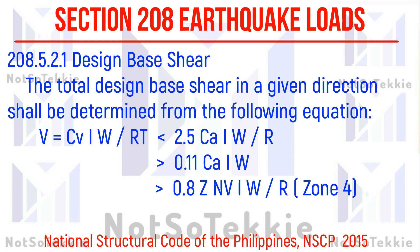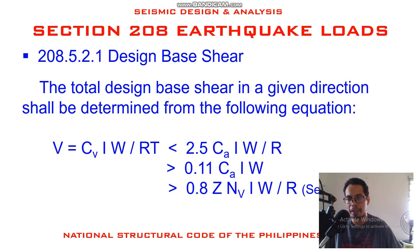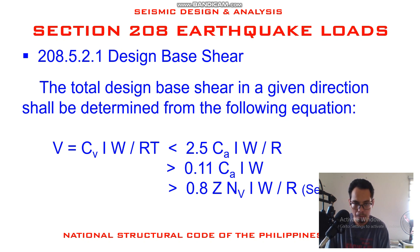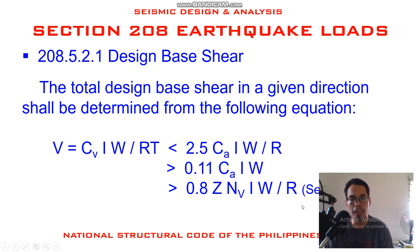The design base shear V = ZC_V·IW/RT shall be less than 2.5·C_A·IW/R, but greater than 0.11·C_A·IW, and also greater than 0.8·Z·N_V·IW/R when in seismic zone 4. We'll compare this with the older version, because the version previously used was the 1992 NSCP, then 2001, 2010, then 2015. When I checked, the formula of the 2001 and 2010 versions is the same as 2015. So today, we'll compare the 2015 formula with the 1992. Let's find out what C_B, I, W, R, and T mean.